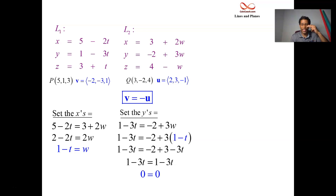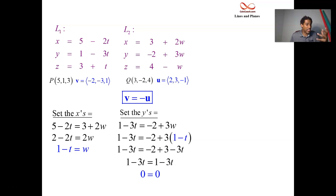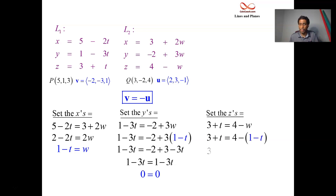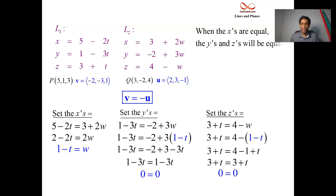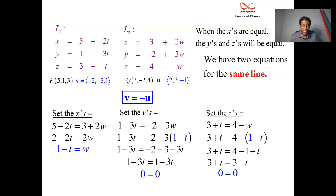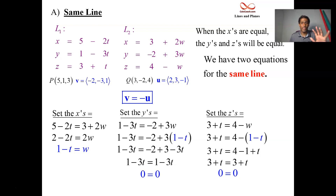Remember our two situations when one vector is a scalar multiple of the other: either infinitely many intersection points (same line) or no intersection points (parallel lines). Assuming they are the same line, the x's, y's, and z's are all equal — and this is the case here. When the x's are equal, the y's and z's are also equal. So these must be the same line — just two different parametric names for it. Parametric equations are not unique.